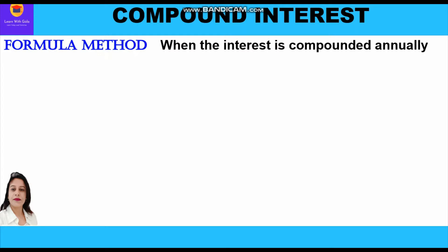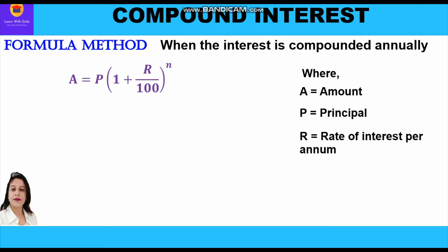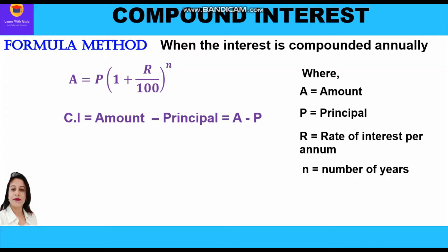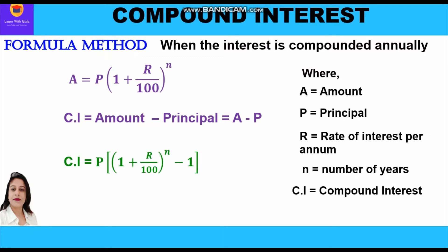When interest is compounded annually, the amount formula we use is A = P(1 + r/100)^n, where A is the amount, P is the principal, r is the rate of interest per annum, and n is the number of years. Compound interest is the difference between amount and principal, so CI = A − P.